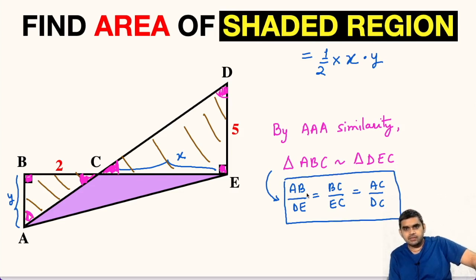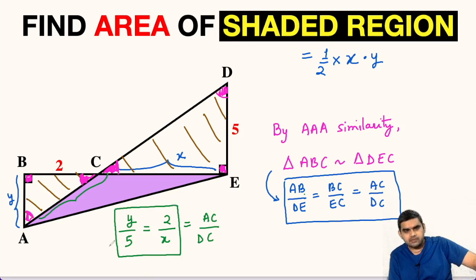Now, let us substitute the values. So AB is given as Y, DE is equal to 5, then BC is 2 upon EC is X equals AC upon DC. AC is this distance, which is not known to us. We will write AC only and then DC.